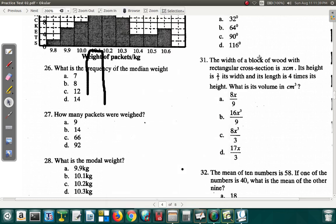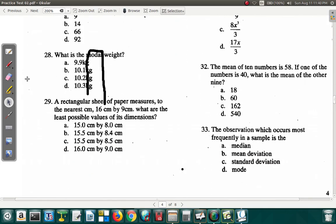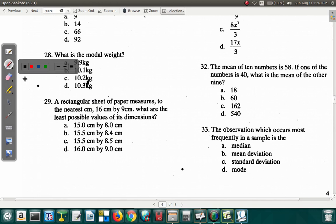Let's move on to question 29. Question 29 says a rectangular sheet of paper measures to the nearest centimeter 16 by 9. What are the least possible values of its dimensions? Once you remember the rule of rounding off, you can do this. This is a rectangular sheet of paper. We say it measures 16 by 9 to the nearest centimeter.